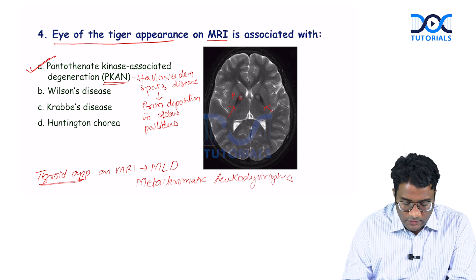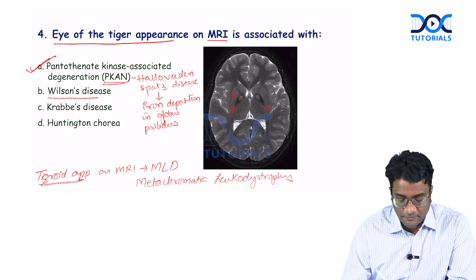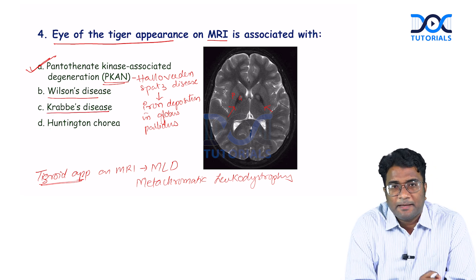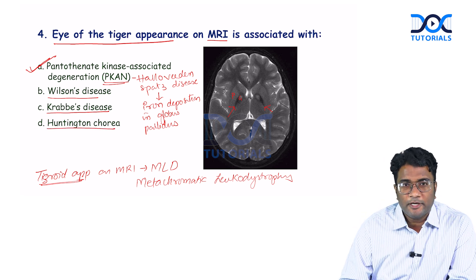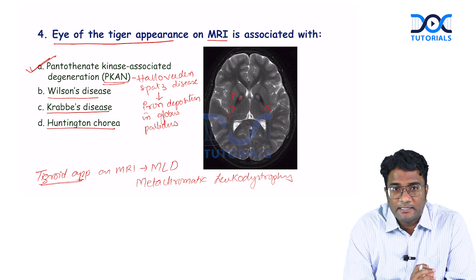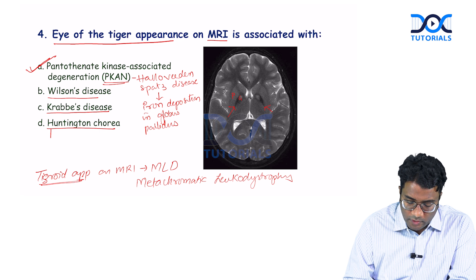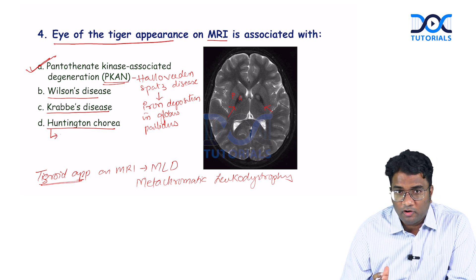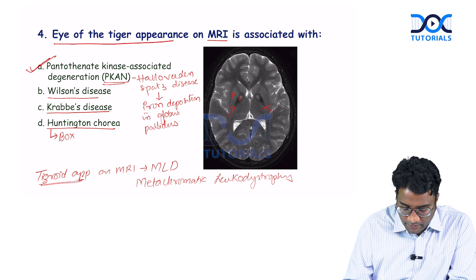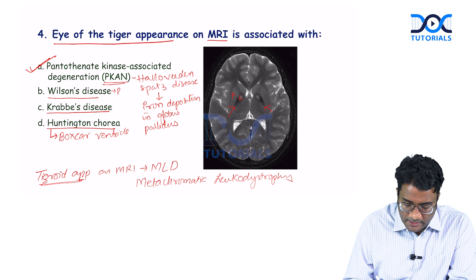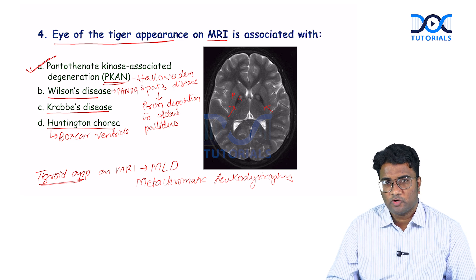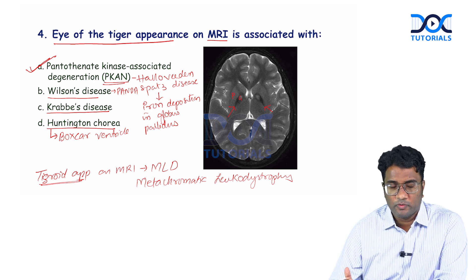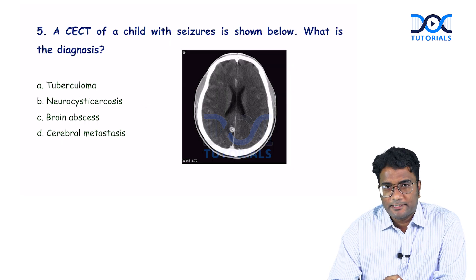Wilson's disease has panda sign on MRI. Krabbe's disease is a leukodystrophy with bilateral thalamic involvement. In Huntington's chorea, there is caudate nucleus atrophy causing dilatation of the frontal horn of the lateral ventricle, producing boxcar ventricles. Eye of tiger appearance is classically associated with Hallervorden-Spatz disease or PKAN, though it can be seen in other neurodegenerations as well.